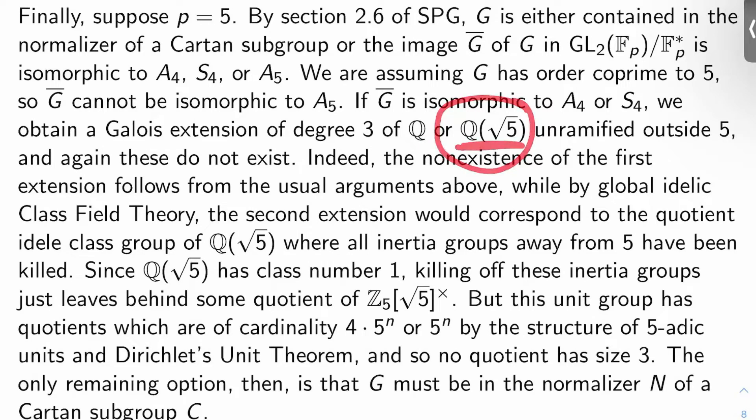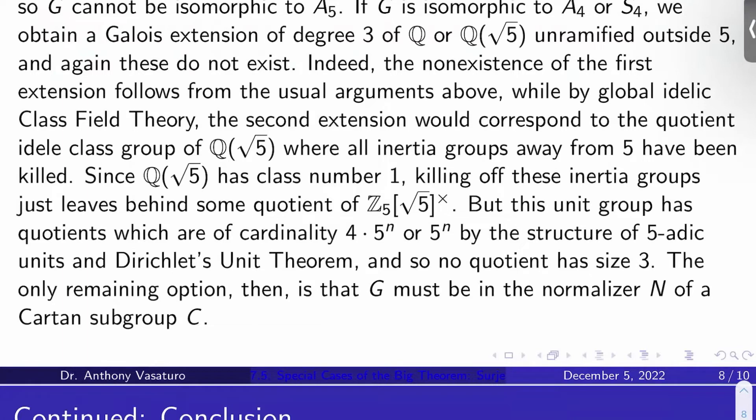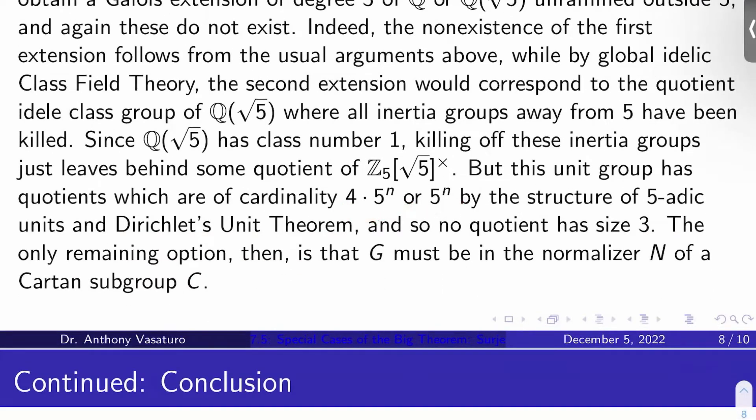The non-existence of the first extension follows from the usual Kronecker-Weber arguments above. The second guy is a little bit trickier because we've got Q adjoin root 5 here. But you can use Adelic global class field theory to see this. For example, the second extension here, the Galois extension of degree 3 of Q adjoin root 5 unramified outside 5, would correspond to some quotient of the Adelic class group of Q adjoin root 5, where all the inertia groups away from 5 have been killed off. But Q adjoin root 5 has class number 1. So if you kill off the inertia groups away from 5, this is just going to leave you behind some quotient of the 5-adic integers adjoin root 5 and then take the units.